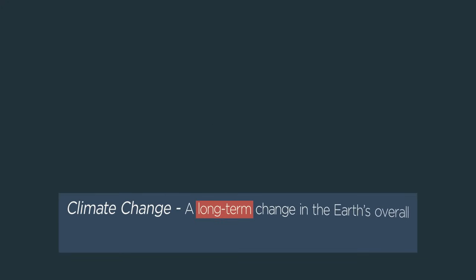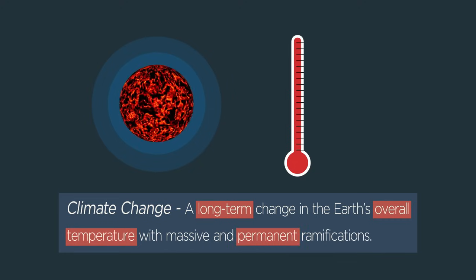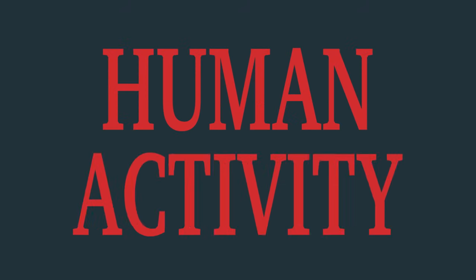Well, what exactly is climate change? Climate change is defined as a long-term change in the Earth's overall temperature with massive and permanent ramifications. Climate scientists believe that this isn't caused naturally by the Earth, but by human activity.